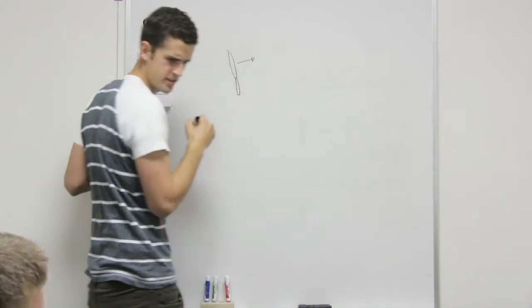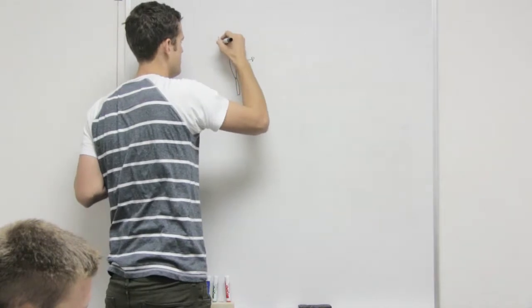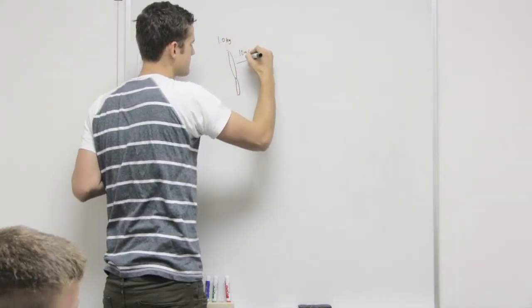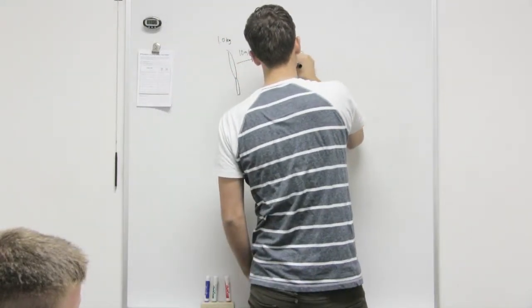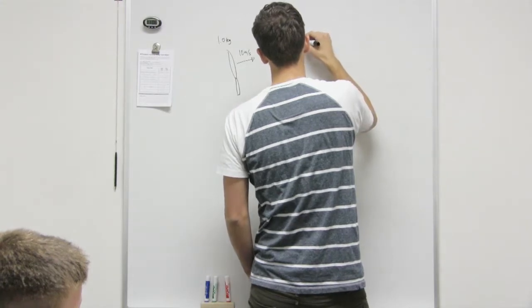So how heavy is your racket? 1,000 grams. Yeah, 1,000 gram racket with a speed of 10 meters per second. And a 60 gram tennis ball. So what does 60 grams mean? Kilograms? 0.06.